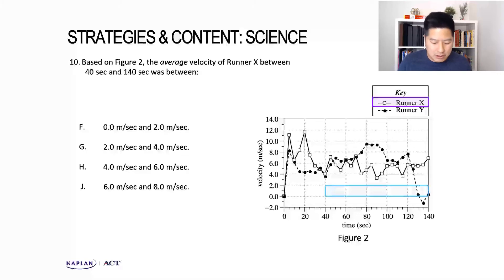If we take a look at answer choice F, that's 40 to 140 in terms of time interval, and on the y-axis it's between zero meters per second and two meters per second. You can see how none of runner X's data points lie here, so we can definitely eliminate answer choice F. This is not going to be the average velocity.